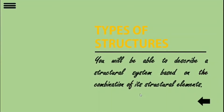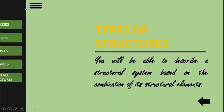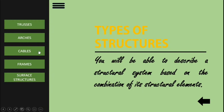Our next topic is types of structures. In this topic you will be able to describe a structural system based on the combination of its structural elements. We have trusses, arcs, cables, frames, and surface structures. When structural elements and the materials that they are made of are combined, it is called a structural system. Each system is constructed of one or more of the basic structures.